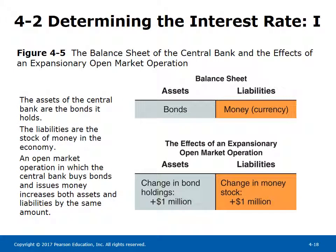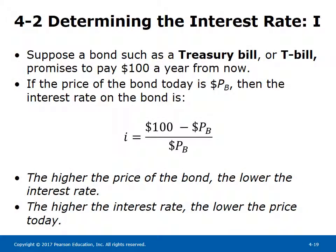Figure 4-5 shows the balance sheet of the central bank and the effects of an expansionary open market operation. The assets of the central bank are the bonds it holds; the liabilities are the stock of money in the economy. When the central bank buys bonds and issues money, both assets and liabilities increase by the same amount. The interest rate i equals the bond's one-year payment (say $100) minus the bond price, divided by the bond price. Thus, the higher the price of the bond, the lower the interest rate, and vice versa.